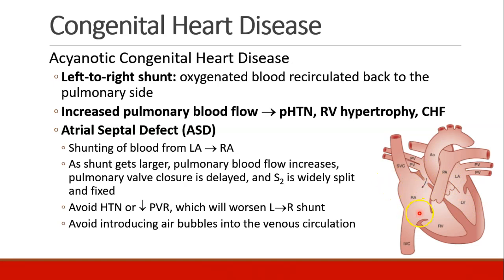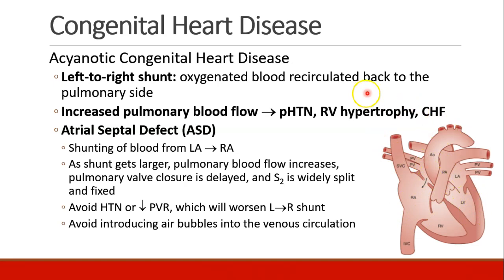We also don't want to have any air bubbles in the venous circulation, because even though the shunt is mostly left to right, if any bubbles go from right to left, then we have bubbles in the LV system, and those bubbles can go to any part of the body, including the brain.